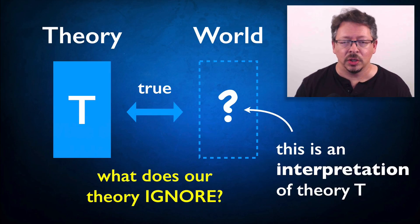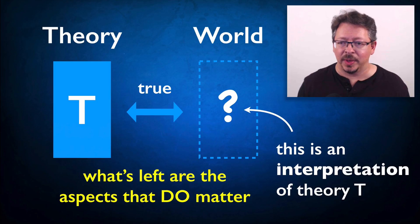And third, we need to pay attention to the question, what does our theory ignore? Theories and models work because they abstract away from certain features of the world, aspects that don't matter to our reasoning about the world. What's left are the aspects that do matter.